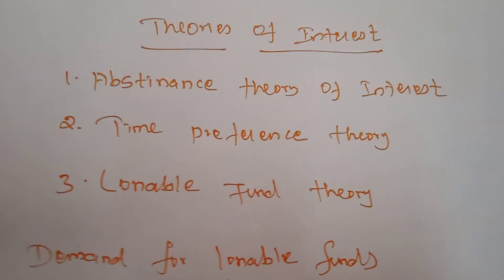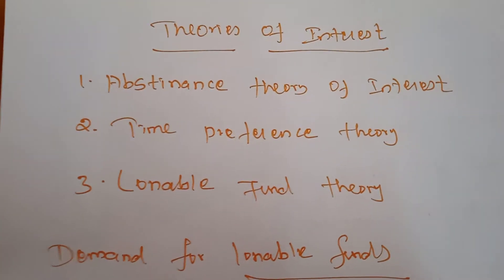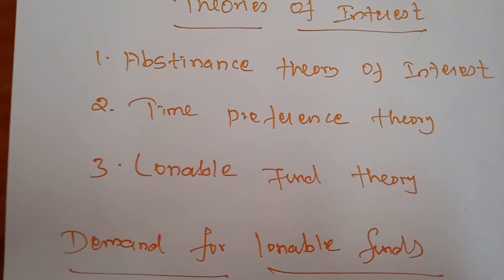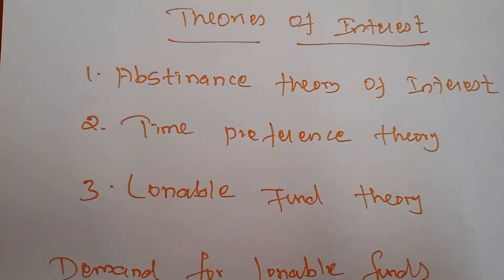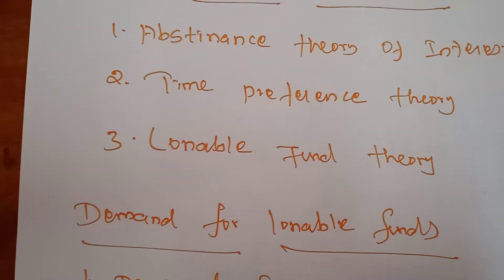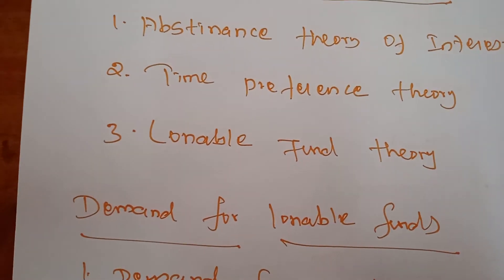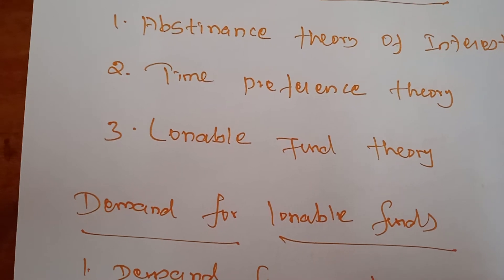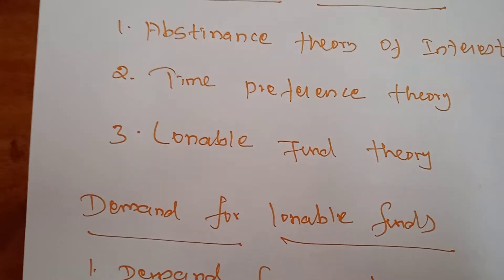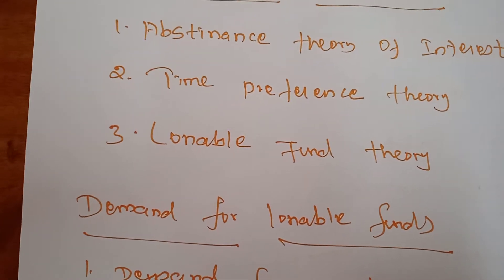Some theories are there explaining interest. The first one is the Abstinence Theory or Waiting Theory. This theory was propounded by N.W. Senior. According to him, interest is the reward for abstaining from the immediate consumption of wealth.